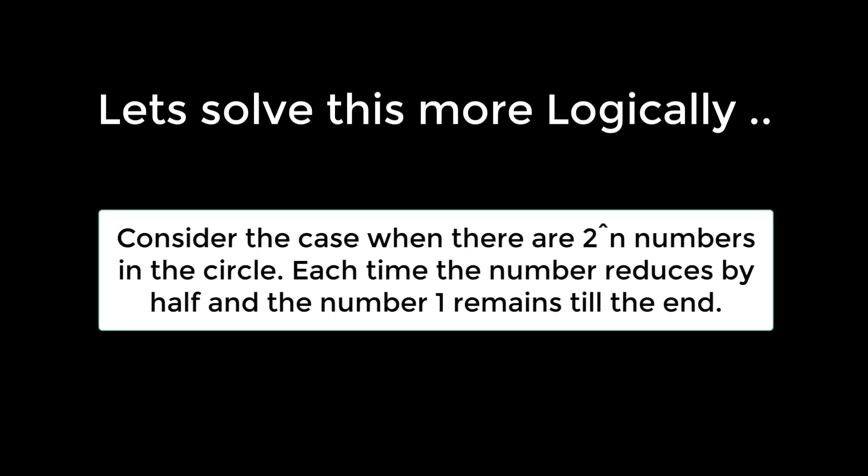Let me solve this puzzle more logically. Consider the case where there are 2 to the power of n numbers in the circle. If the total number of people is 2 to the power of n, then each time the number reduces by half and number one remains till the end.